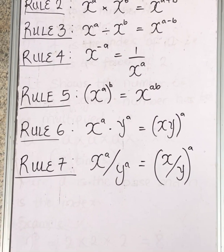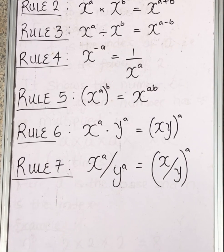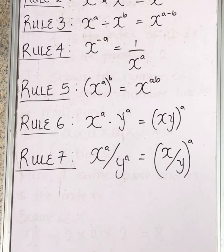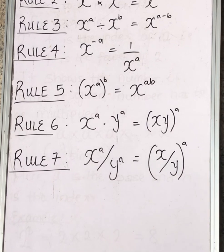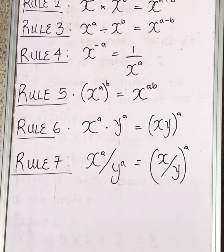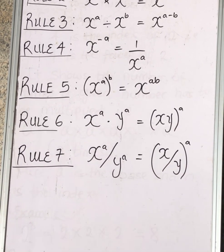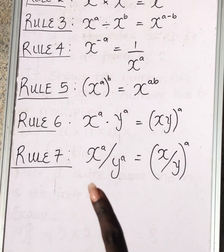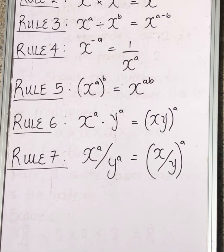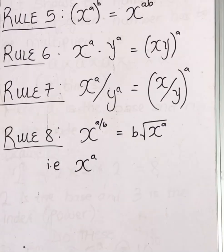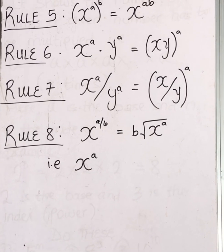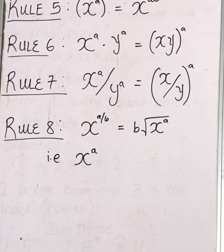Rule number seven says when you divide two different bases with the same power, you do the same thing — divide them and bring the power, which is common to both. Rule three looks like rule seven but they are two different things: rule three is same bases, rule seven is different bases.